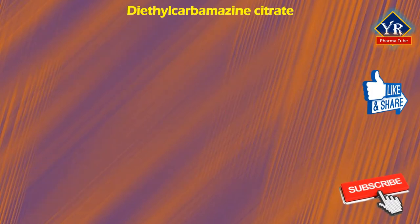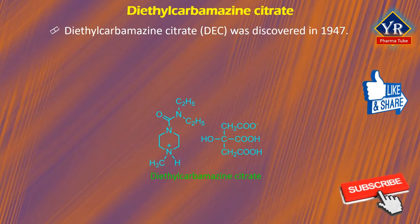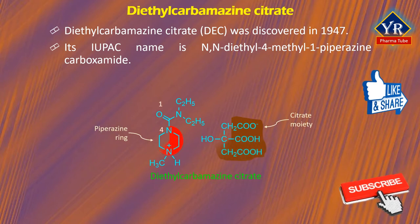The first drug of this lesson is diethylcarbamazine citrate. Diethylcarbamazine citrate, abbreviated DEC, was discovered in 1947. Its IUPAC name is N,N-diethyl-4-methyl-1-piperazine carboxamide, which is a piperazine carboxamide, or simply piperazine citrate.